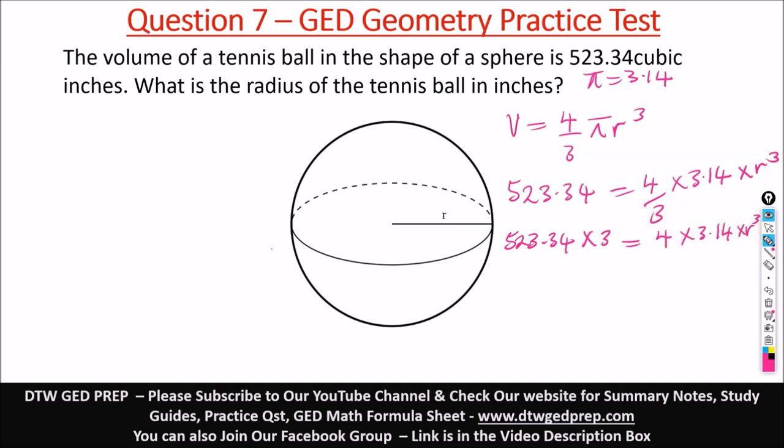So next is to get r cubed alone. R cubed, because that's the target. R cubed has to stand alone. To make r cubed stand alone, we can divide both sides by this 4 times 3.14. So this would cancel out, so we're left just with r cubed here.